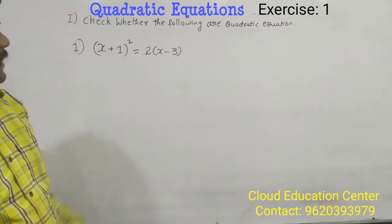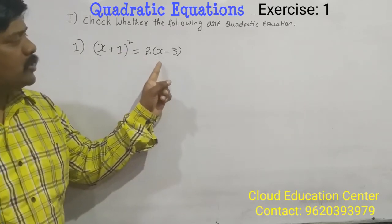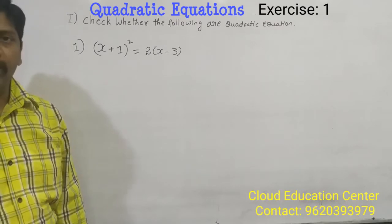So the question is given, x plus 1 whole square is equal to 2 into x minus 3. Come on, how to solve?